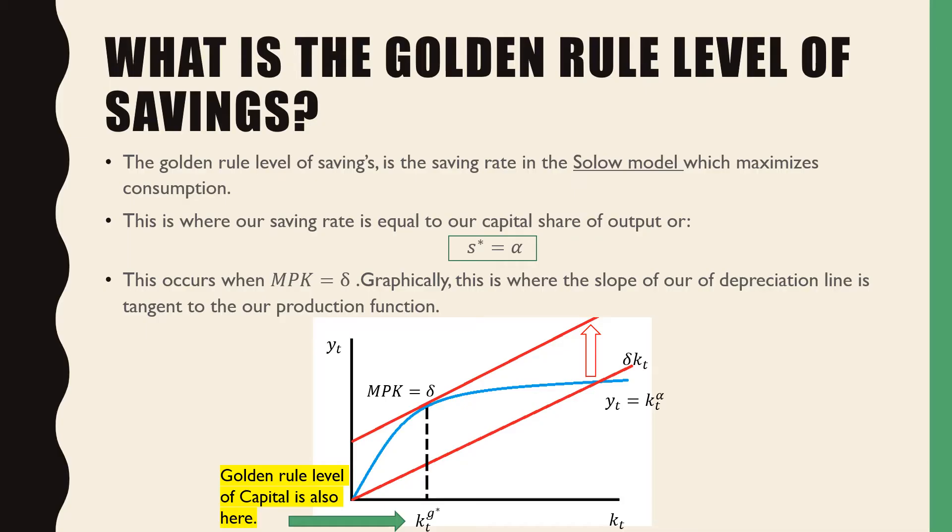What is the golden rule level of savings? The golden rule level of savings is the savings rate in the Solow model which maximizes consumption. This is where our savings rate is equal to our capital share of output, or S star is equal to alpha.